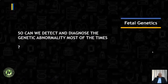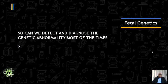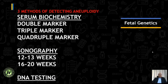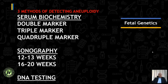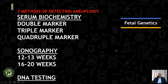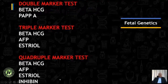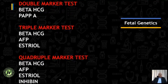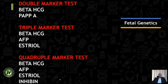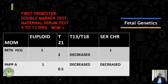Can we detect and diagnose genetic abnormalities? Most of the times the answer will be yes, but with a combination of multiple parameters — especially three methods for detecting aneuploidy: one is by the use of serum biochemistry, another by use of sonography, and the third by use of DNA testing. For serum biochemistry, we have the double marker test in the first trimester and triple, quadruple, and penta-screening in the second trimester.